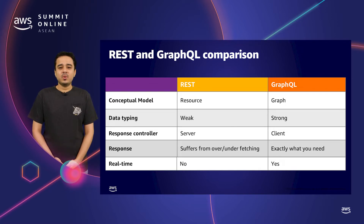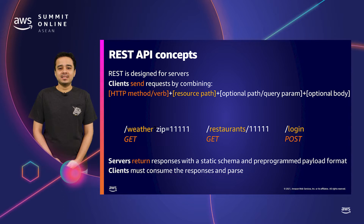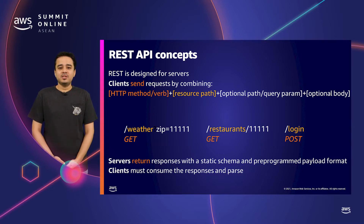Lastly, REST works in a request-response model, while GraphQL also supports that but can additionally provide data in real-time with something called subscriptions. Now let's quickly refresh our REST concepts. REST is designed for servers. The client sends a request by combining a mandatory HTTP method — sometimes referred to as a verb — with a resource path, an optional path or query parameter, and an optional body. For example, a GET to slash weather provides a query parameter zip with value 11111. Alternatively, you can query slash restaurants by providing a path parameter 11111. The server returns a response with a static schema and pre-programmed payload format, and clients must parse and extract the fields they need.